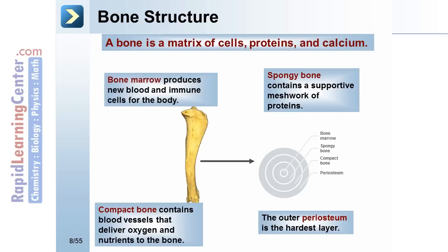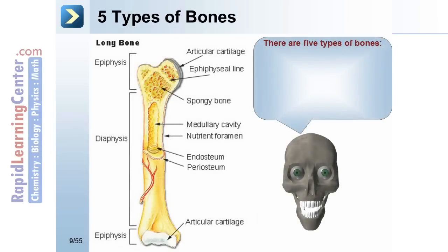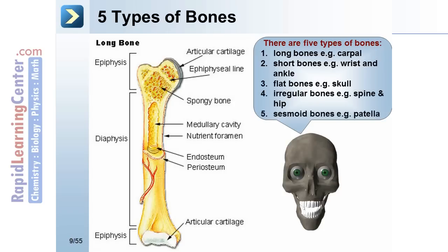Bone marrow produces new blood and immune cells for the body. There are five types of bones: long bones, short bones such as those in the wrist and ankle, flat bones such as the skull, irregular bones such as the spine and hip, and sesamoid bones such as the patella.